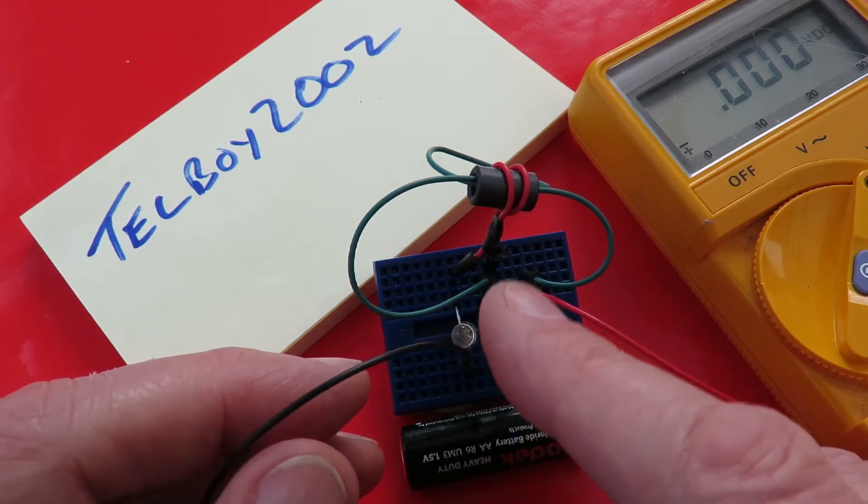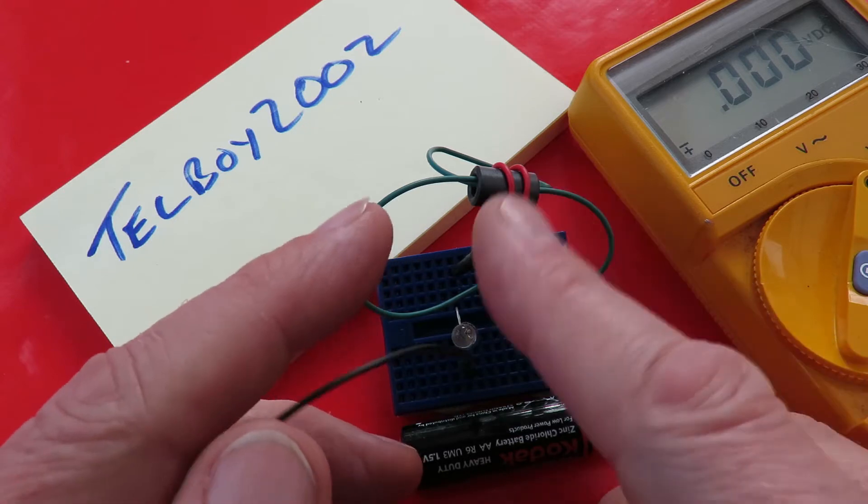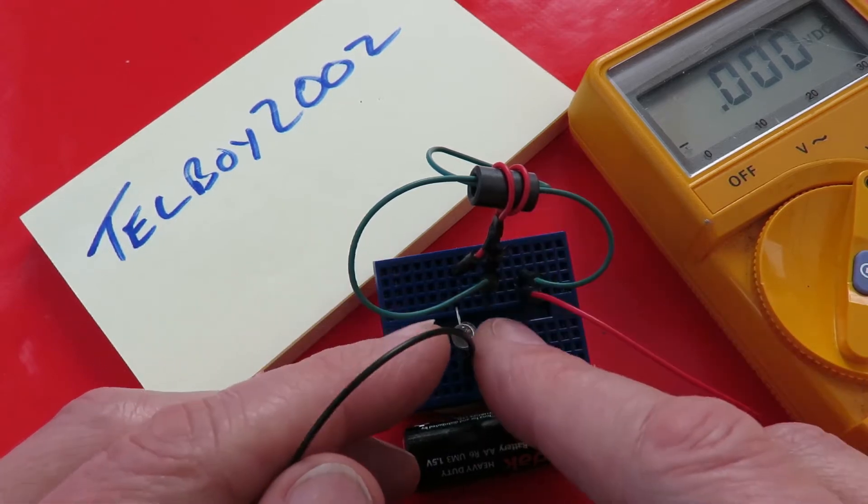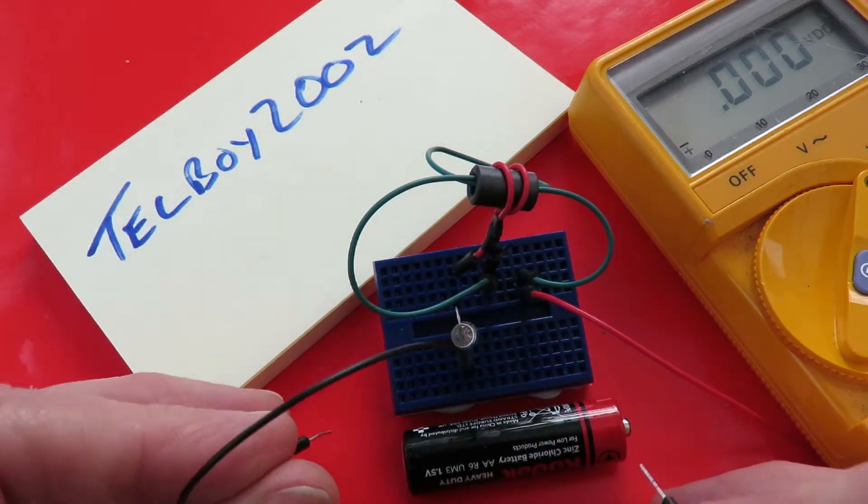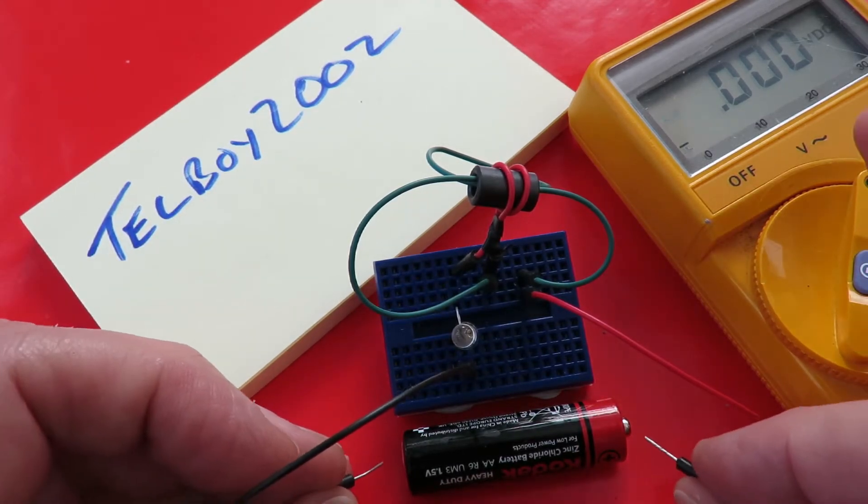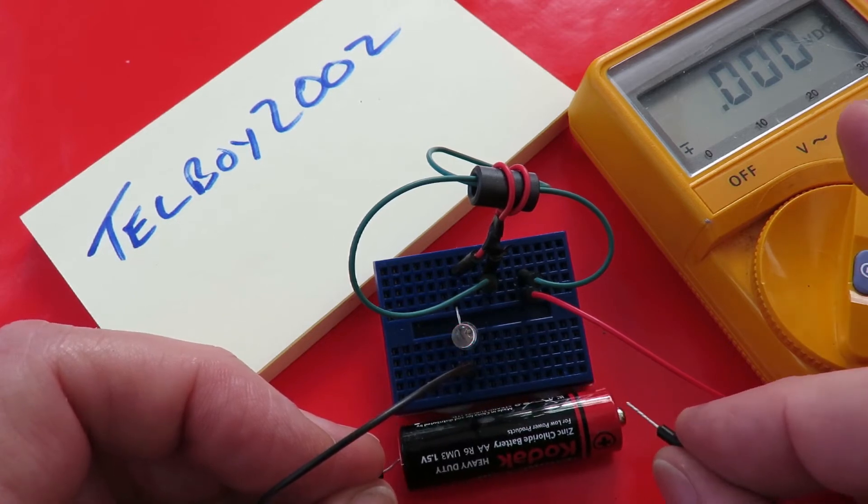The coil building up current and back EMF causes a spike. That's the spike that actually lights the LED, not the 1.5V from the battery. And yet no transistor in circuit and the LED was still lighting.